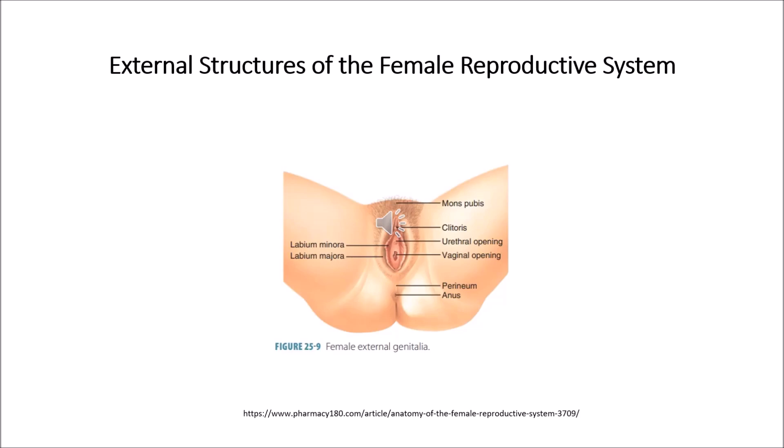Now let us look at the internal reproductive organs of the female reproductive system. The first one is the vagina. The vagina is a canal that joins the cervix to the outside of the body. It is also known as the birth canal.